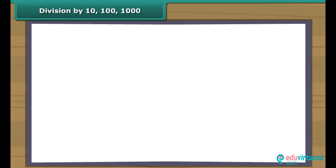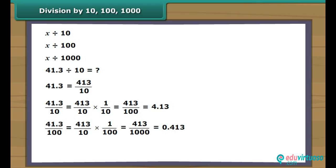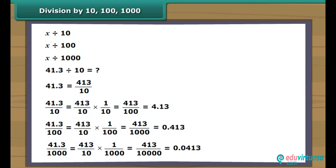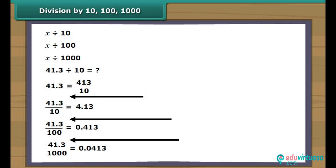Division by 10, 100, 1000. Let us learn the division of decimal numbers by 10, 100 and 1000. Let us find the answer for 41.3 divided by 10. We know that 41.3 means 413 divided by 10. Thus, 41.3 divided by 10 is equal to 413/10 × 1/10, which gives 413/100 = 4.13. Similarly, when we divide 41.3 by 100 and 1000, we get 0.413 and 0.0413 respectively. Thus, when a decimal number is divided by 10, 100 and 1000, the decimal point in the quotient shifts to the left by 1, 2 and 3 places respectively.